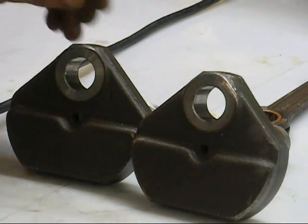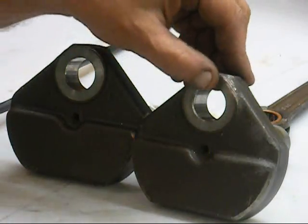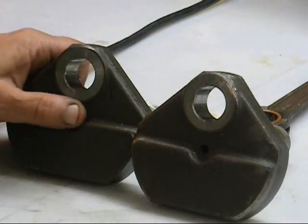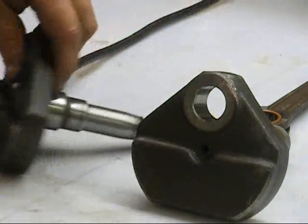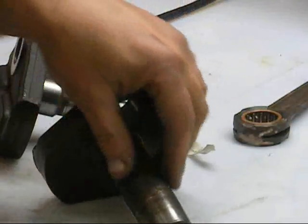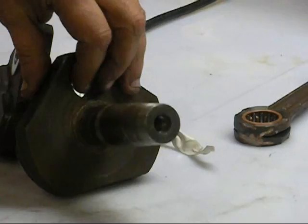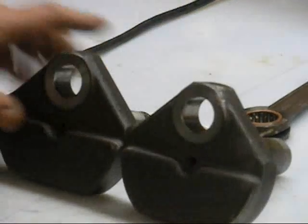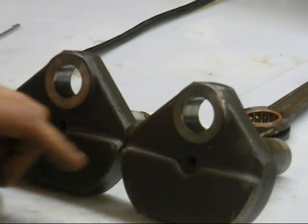We got rid of the burrs on both webs at the top. Everything here feels nice and flat. Next step is we're going to go ahead and I'm going to media blast these. I usually don't do this to crankshafts, but this is pretty old and pretty nasty. So rather than just wire brush it, which is what we usually do, I'm going to go ahead and media blast these and get them cleaned up.